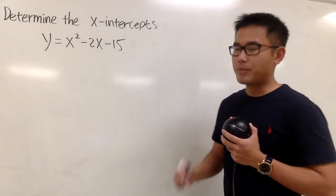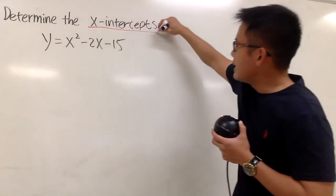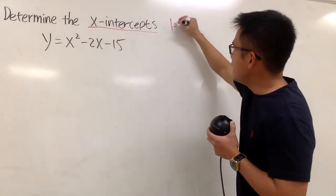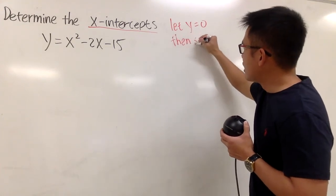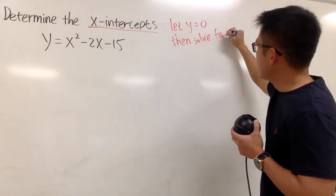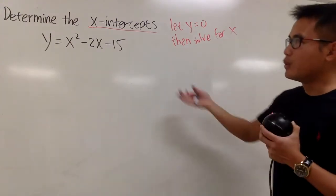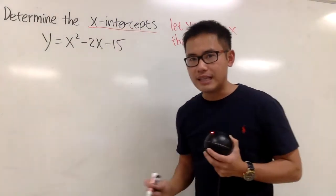And this is what we have to remember. Whenever we want to find the x-intercepts, first we are going to let y to be 0, and then solve for x. So this is what we do whenever we want to find the x-intercepts.